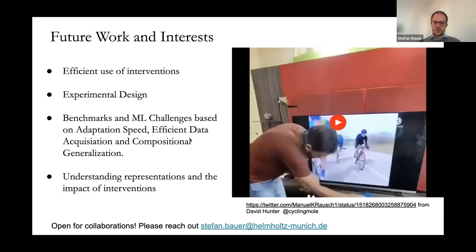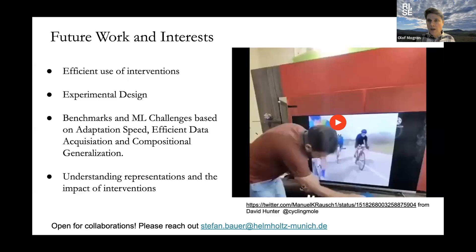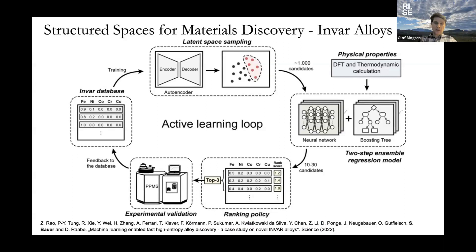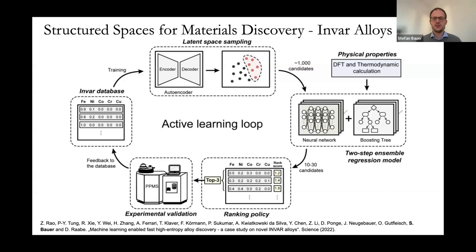Q&A: The active learning experimental setup — is that a lab setting, not just simulation? Yes. You basically propose new compositions or alloys and they were actually forged in the real world. It's not just that you discovered something in simulation — you actually forge them and test them in the real world.